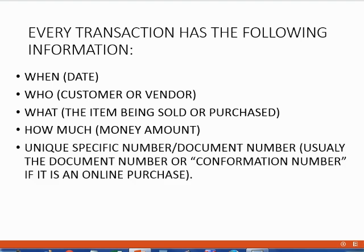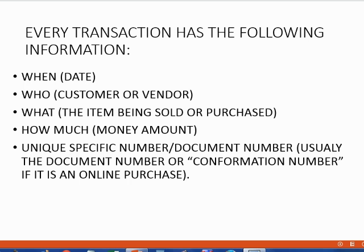Every source document must have a unique specific number that identifies that document and identifies that transaction. Many of you have seen invoices before — invoice number 3, invoice number 10. Many of you have seen checks before, and in the top right corner of the check it says check number 60, check number 70. If you did the transaction online, you might not have a physical document, but every transaction, whether online or done with a document, has a unique specific number that identifies the transaction.